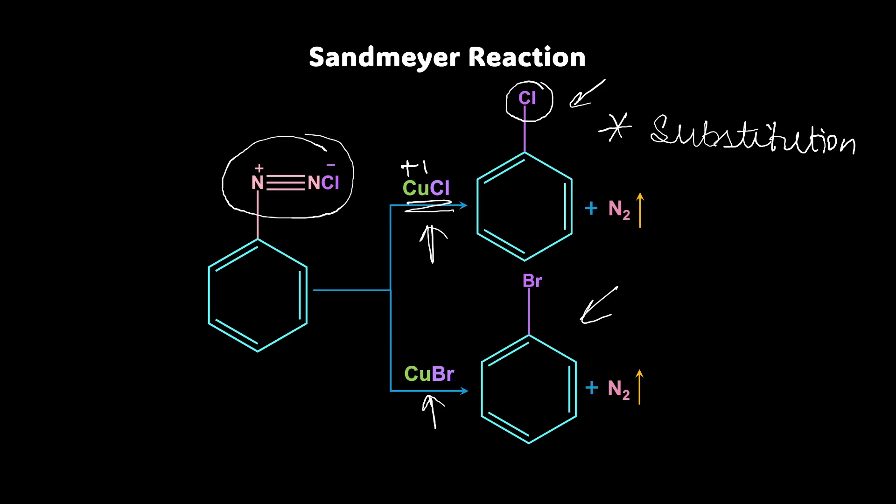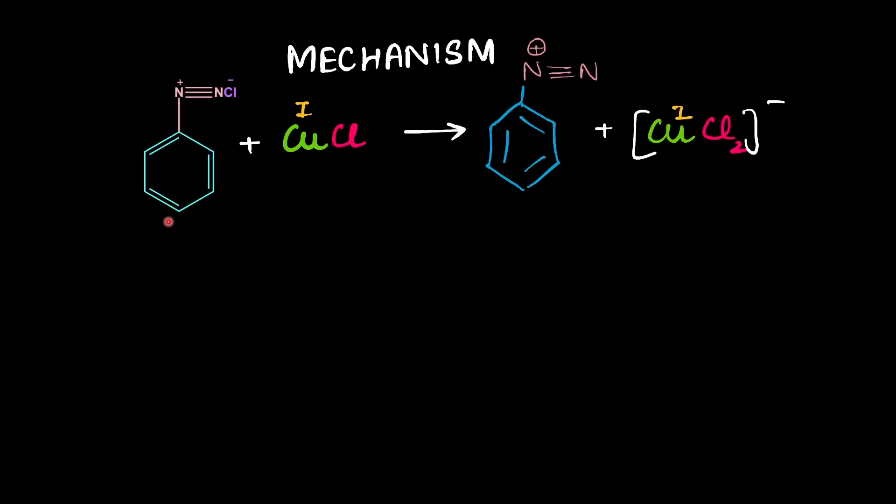Now, it is quite interesting to see the mechanism of Sandmeyer reaction. So what we do is we start with benzene diazonium chloride and to it we add cuprous chloride. Now, observe this chloride ion in BDC. The chloride ion from benzene diazonium chloride is transferred to cuprous chloride generating this complex, CuCl2-, where copper is still in +1 oxidation state. So here you can see there is no redox reaction that has taken place. It is just an ion exchange which has taken place.